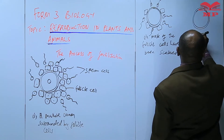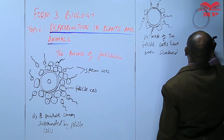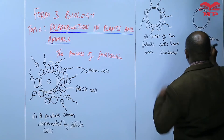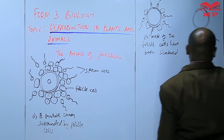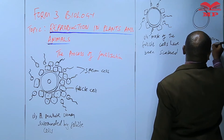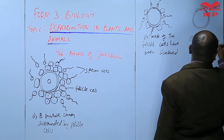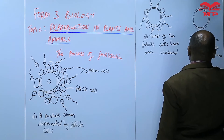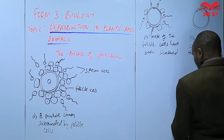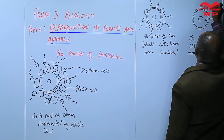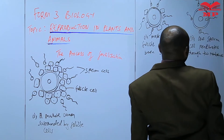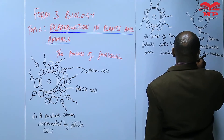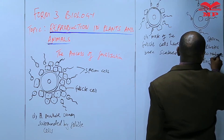The third diagram shows that one sperm cell penetrates through the membranes. Once the sperm cell penetrates through the membranes, the vitelline membrane hardens.